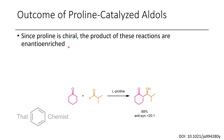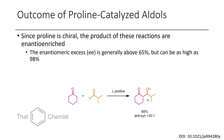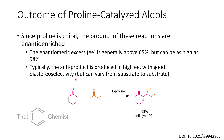When doing a proline-catalyzed aldol, because proline is chiral, the products will be chiral as well. If you want one enantiomer, use L-proline; for the opposite enantiomer — where the relevant portion comes out of the page and the hydroxy goes in — use D-proline. Generally, the enantioselectivity is high, above 65% and as high as 98% ee. There can also be diastereoselectivity between anti and syn products, where anti is favored, though this depends on which ketone and aldehyde are used.